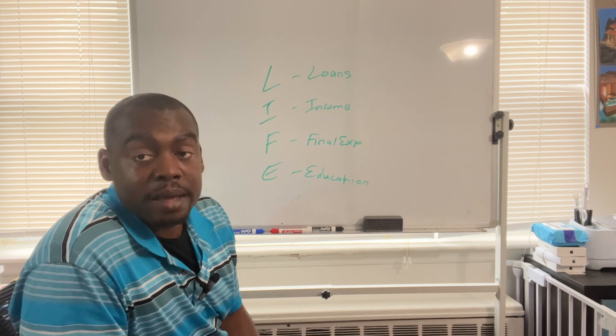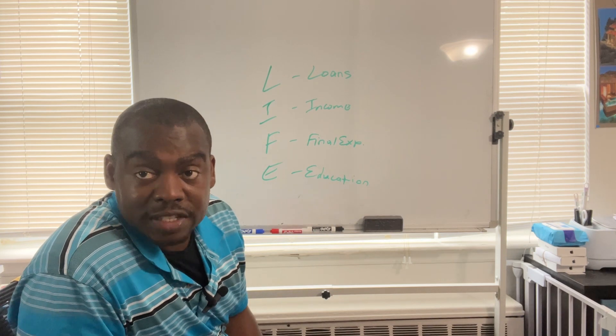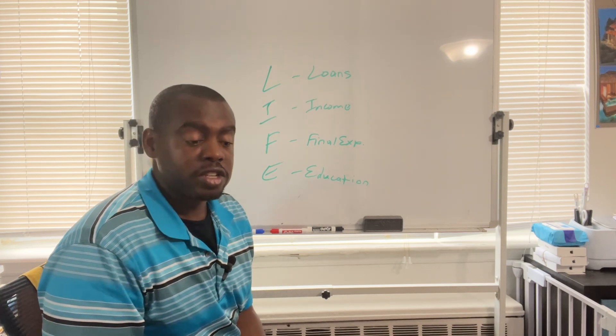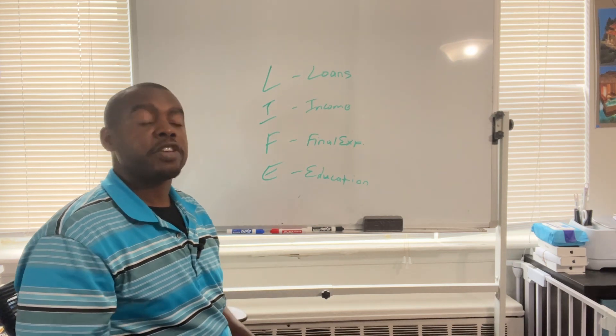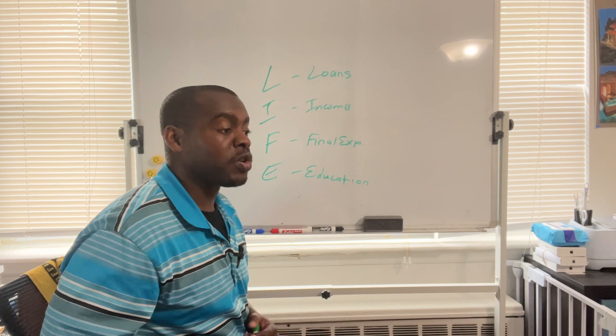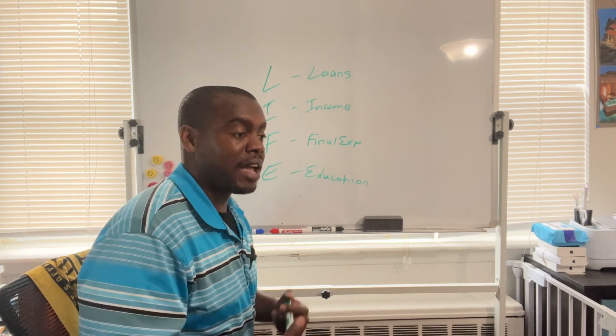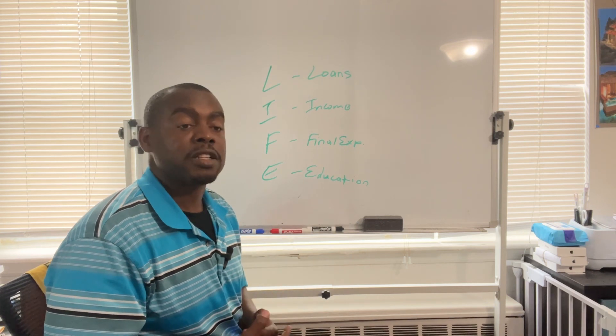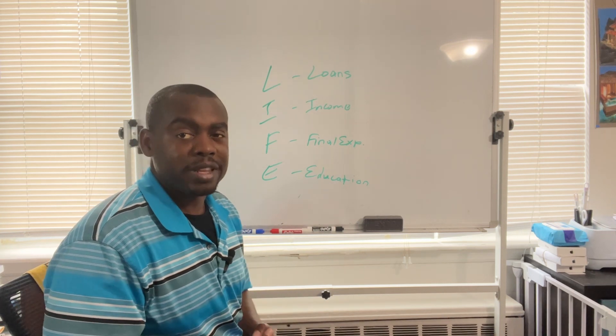You're going to do it based on the number of years of your salary. Maybe you want to have three years of your salary, maybe five years, maybe ten years. You're going to put a number where you feel comfortable that you can have your family have that money there to keep going until they're adjusted to living without your income.